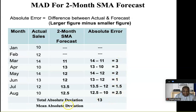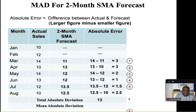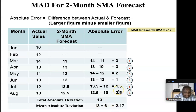Then we want to find the average — we're finding the mean absolute deviation. We have 1, 2, 3, 4, 5, 6 errors. So we're finding the average of these six figures: 13 divided by 6 = 2.17. The mean absolute deviation for the two-month simple moving average is 2.17.